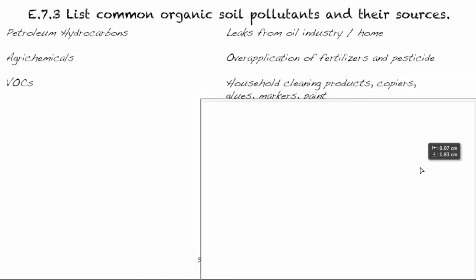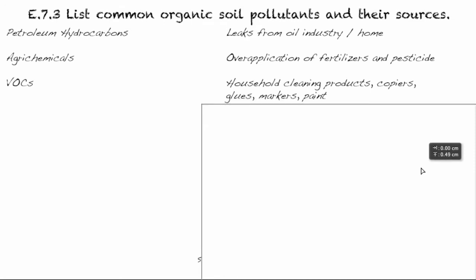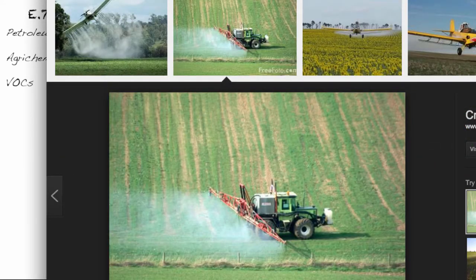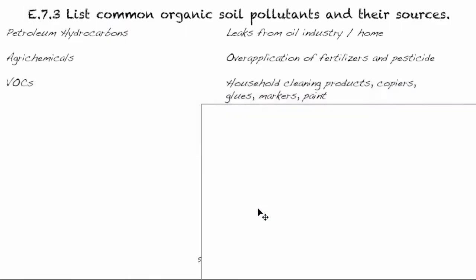VOCs — we saw those before when talking about air pollutants. Sources include household cleaning products, especially the strong-smelling ones, copiers, glues, markers, and paint. You can visualize that with the fumes. Volatile means they form vapors at quite low, everyday temperatures.